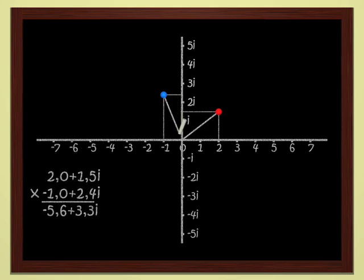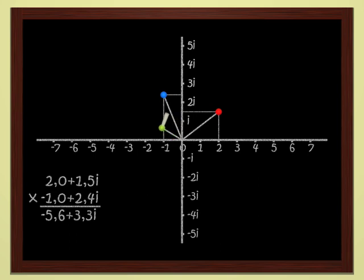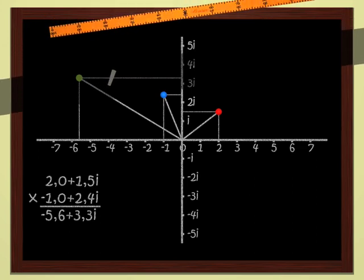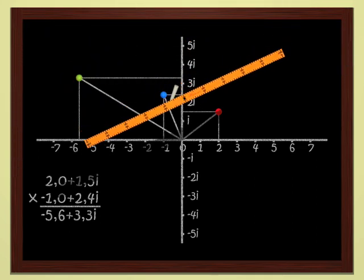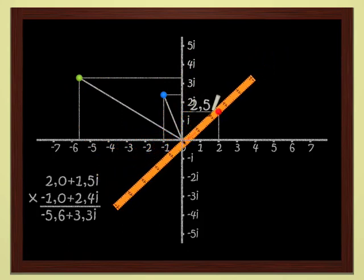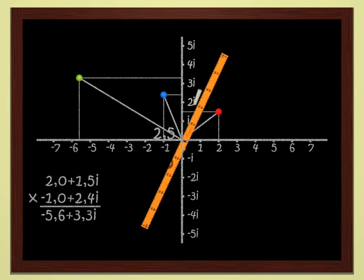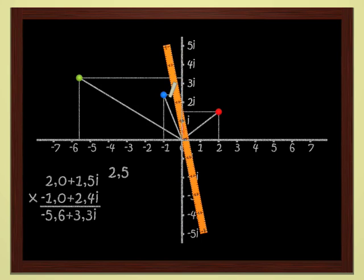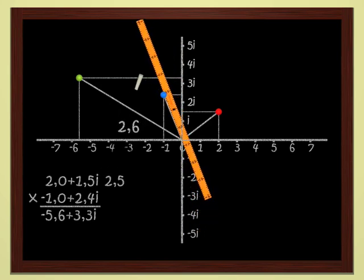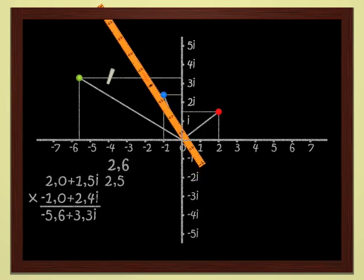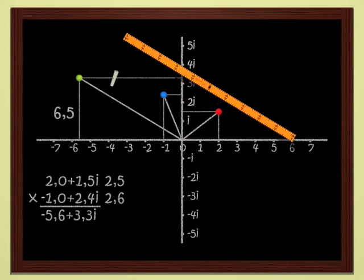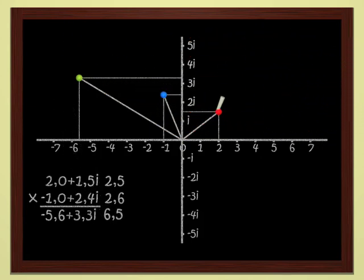It seems the right time to define two notions: the modulus and the argument of a complex number. The modulus of a complex number Z is just the distance from the origin to the point that represents Z in the plane. Let's use the ruler to determine the modulus of the red point, which is 2 plus 1.5i. It measures 2.5. For the blue point I get 2.6, and for the green point — the product of the two — I have 6.5. As a rule, the modulus of a product of two complex numbers is just the product of the moduli of the two numbers.